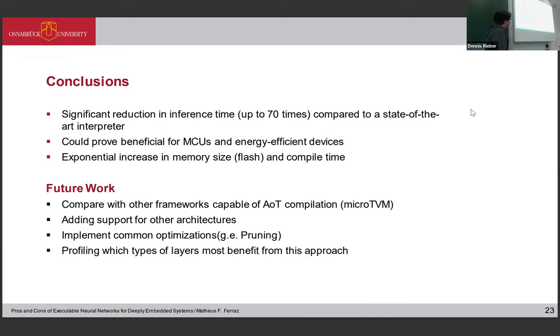I was planning to evaluate it with other ahead-of-time compilers such as MicroTVM but I just didn't have time for it yet. As a first result, this could prove beneficial for microcontrollers and other energy-efficient devices because normally the main limitation is on the RAM side, not in flash size. If it's a small network it would still fit on a small microcontroller. With better inference time, we would have really good benefits in energy consumption. The main downside is the exponential increase in memory size and compile time. For future work, I plan to compare it with frameworks that have ahead-of-time compilation, add support for other architectures and other layer types, and implement common optimizations such as pruning, because this approach could heavily benefit from pruning as it would reduce the code size drastically. Also profiling which types of layers most benefit from this approach, because maybe we can use a hybrid approach and get the best of both worlds.